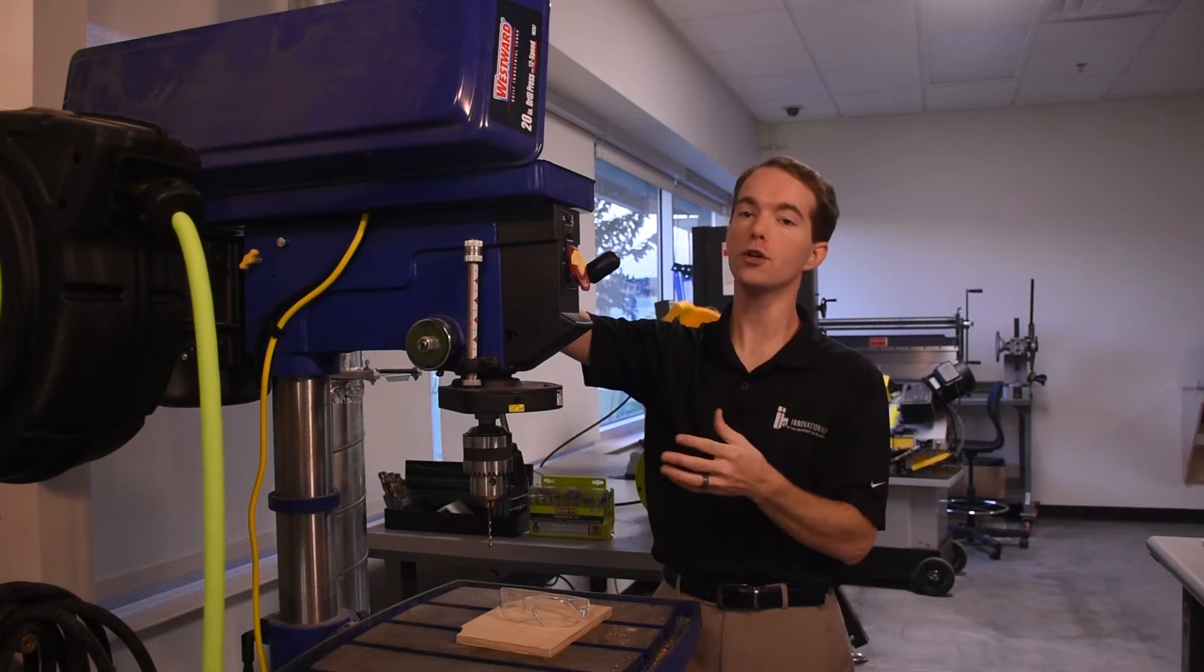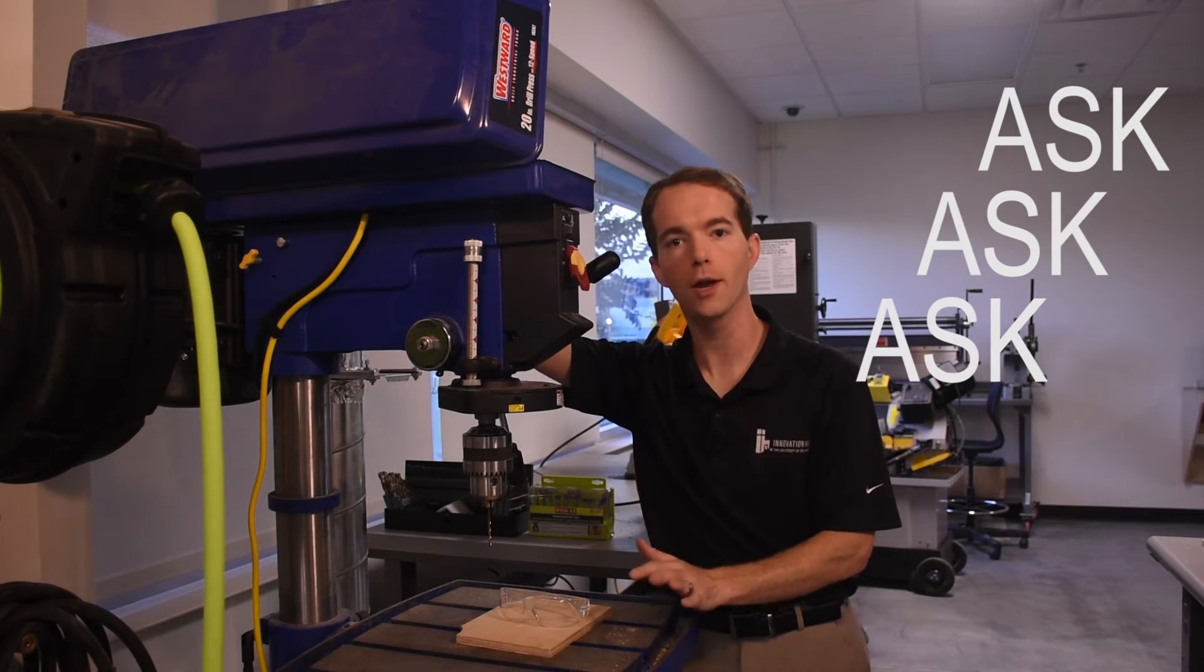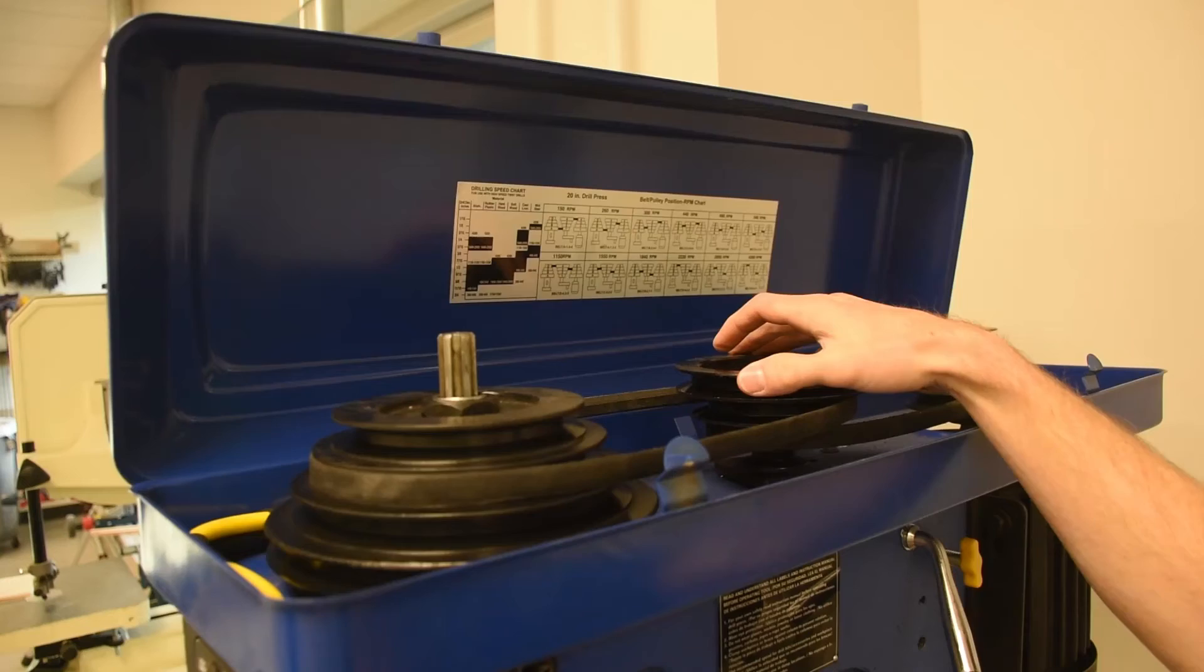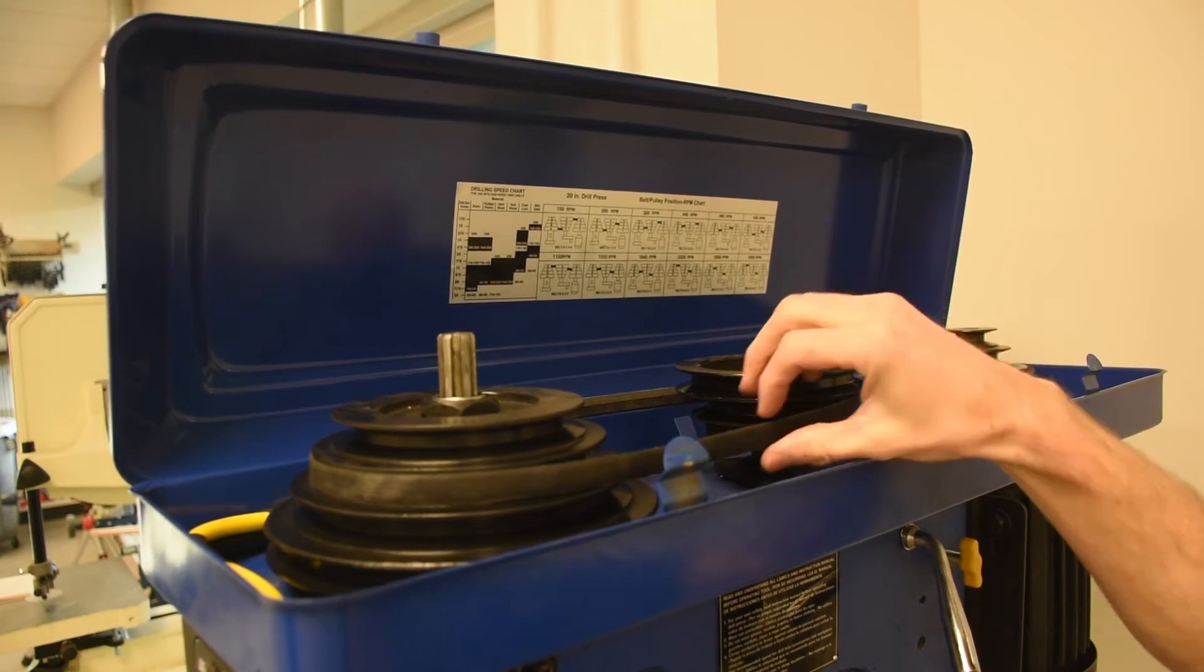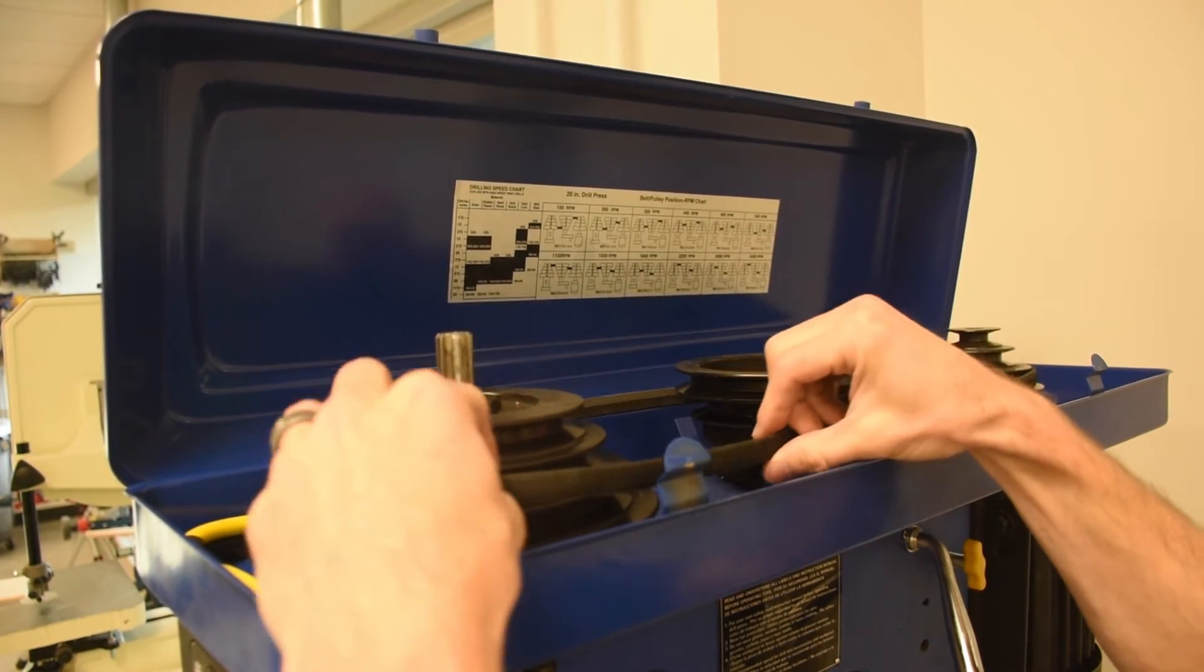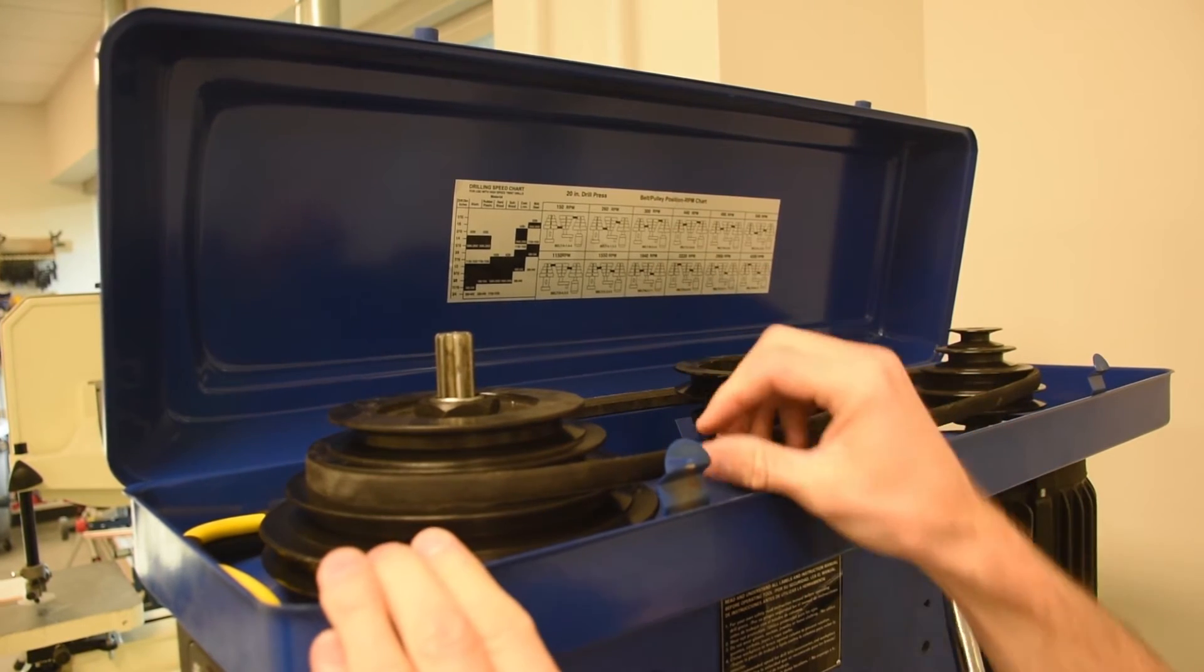Now, if you're unsure, please always ask. You will not look stupid for asking. In fact, you'll look very intelligent for asking. You always have to go from large to small whenever you're trying to change it. You can't take this belt and go to a larger pulley without going to a smaller one first.